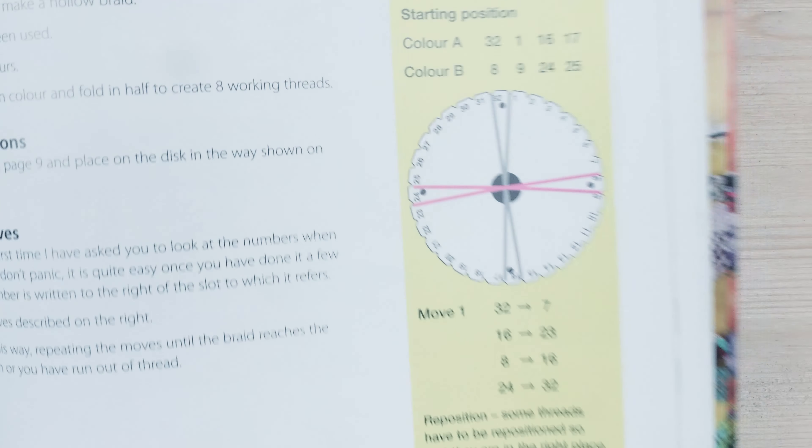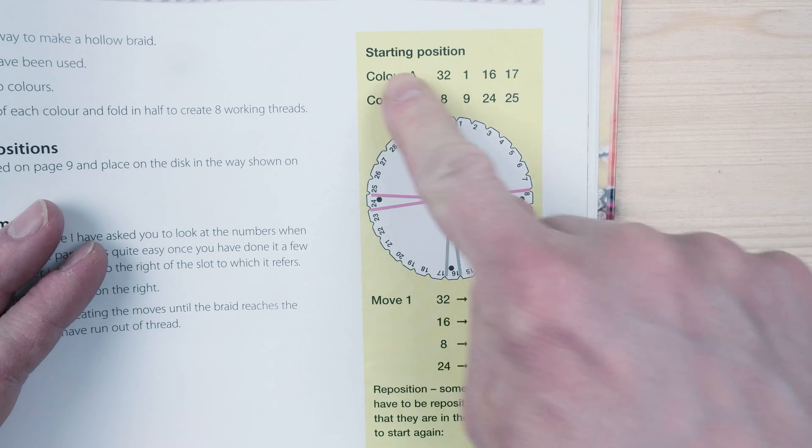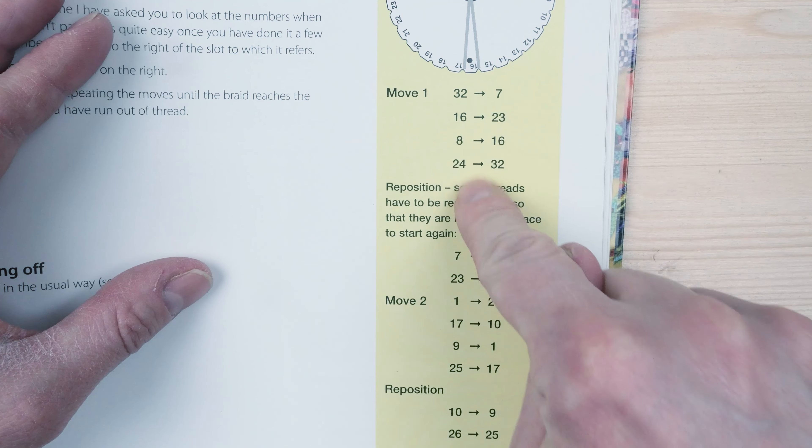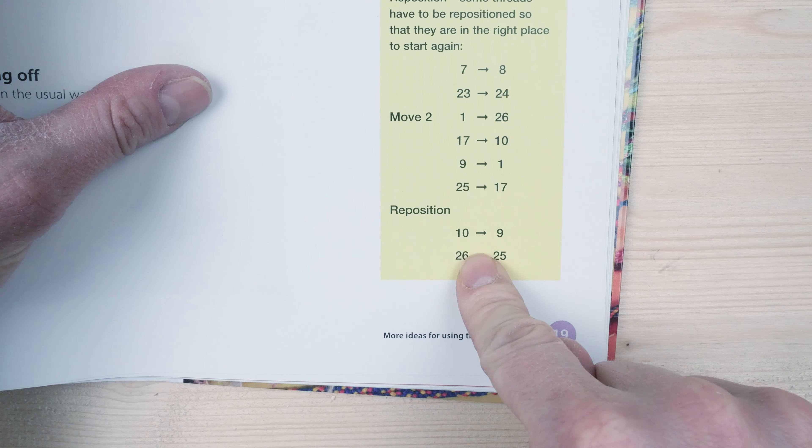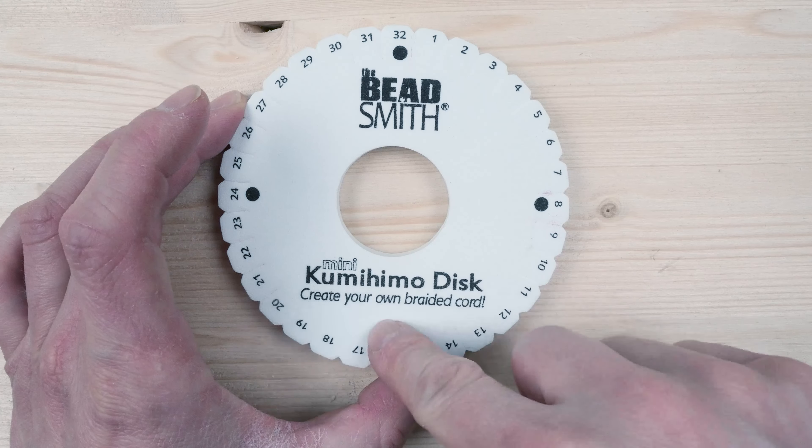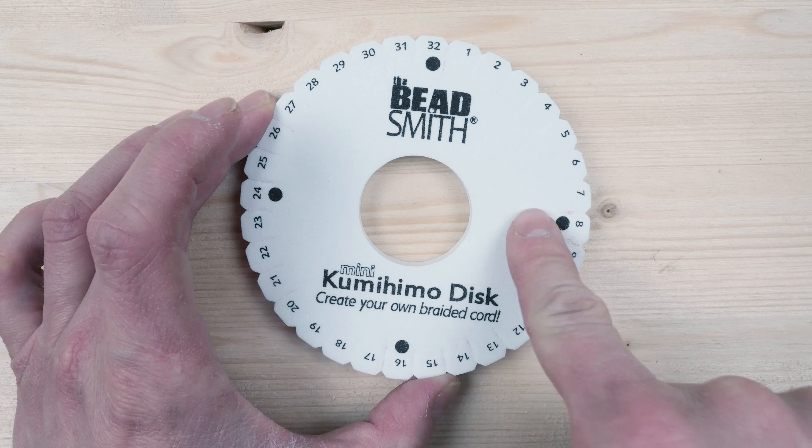So you're going to get a set of written instructions for the setup, then you can simply do your moves. These dots here on the sides are used to quickly position your cords.